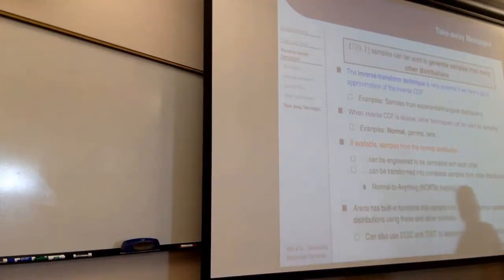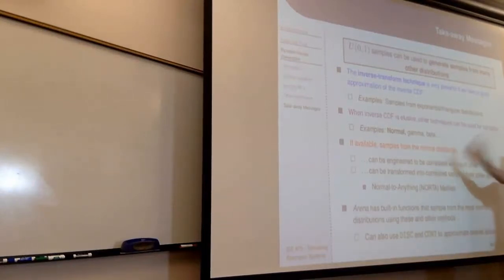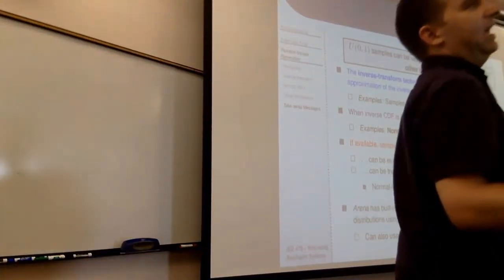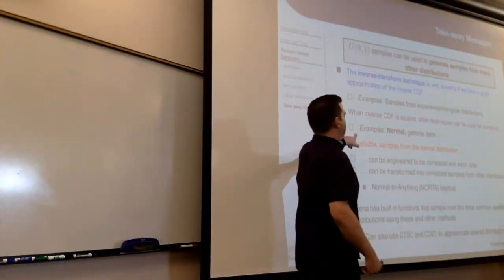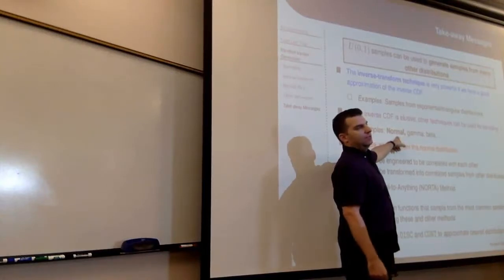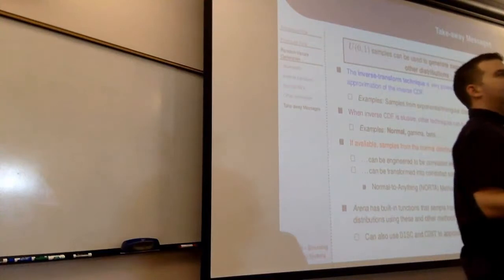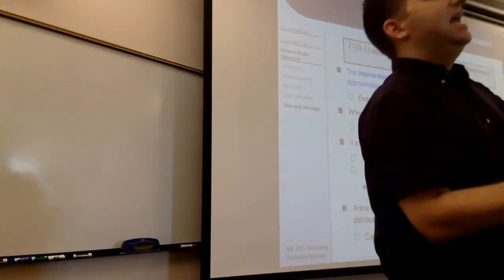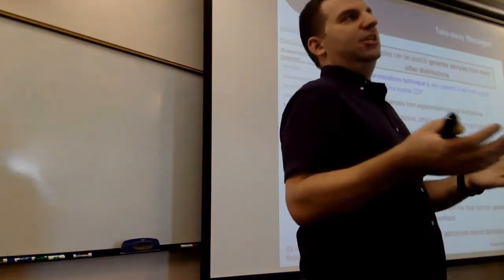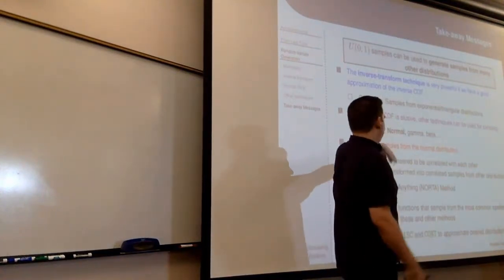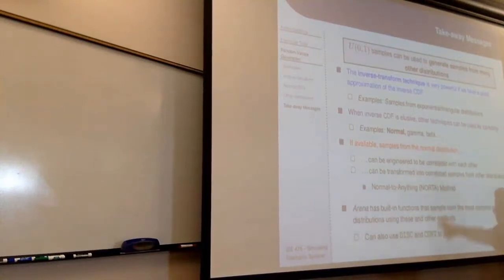The big takeaway from that lecture — I'm skipping the extra slides about what to do when you don't have an invertible CDF. In more advanced classes like IE 545, you'd learn how to sample from a normal. We very often sample from a normal distribution, and Arena gives us a function that already does that. But if you ask how to sample from a normal from scratch, it's complicated because the inverse CDF of a normal doesn't have a closed-form expression, so you can't use the inverse transform method directly. The same applies to gamma, beta, and other common distributions.